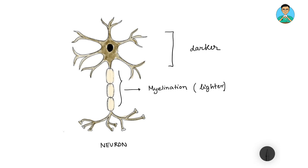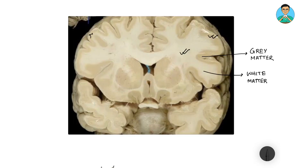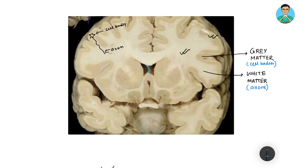This darker and lighter color difference creates the color difference on a macroscopic level. The neurons — the cell body and dendrites — remain in the gray matter area, and the axon remains in the white matter. This is how the brain is arranged. Gray matter is nothing but a collection of neuronal cell bodies, whereas white matter is a collection of axons. About white matter we will see in the next video.